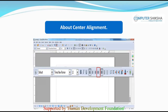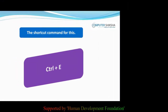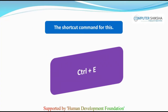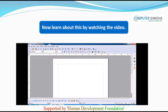By using center alignment, you can get your text or paragraph centered in the page, or by using this option, you can start typing from the center of the page. We can use center alignment for writing the heading or title also. The shortcut command for this is Ctrl+E. Now, learn about this by watching the video.